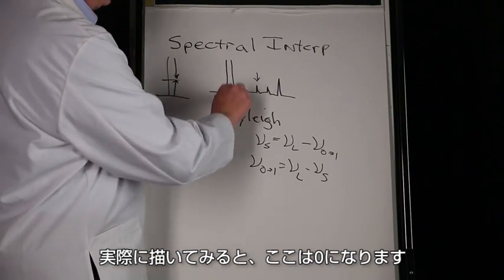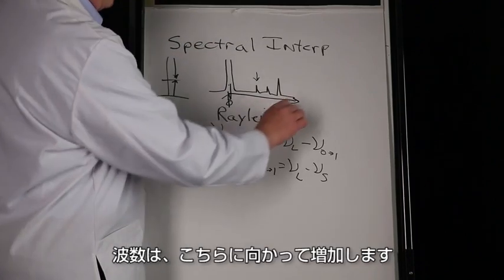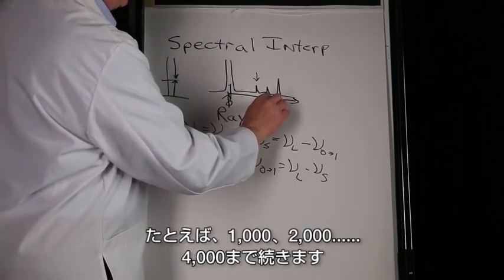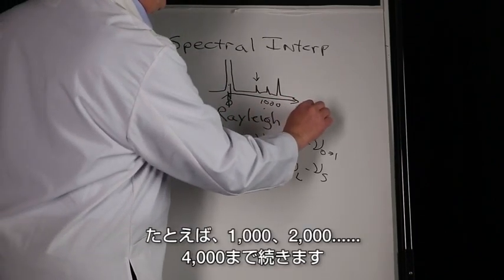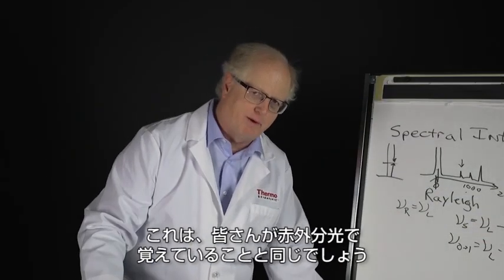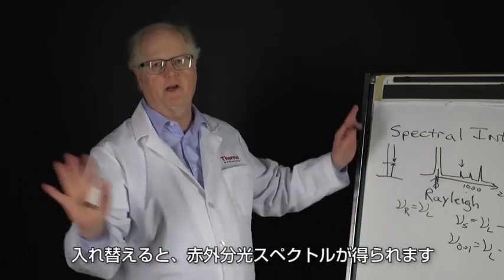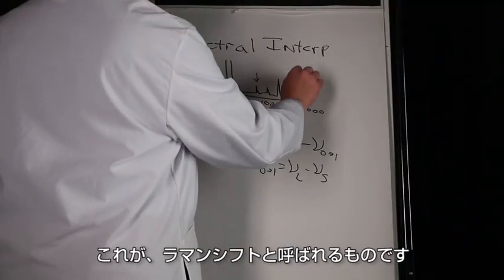We actually plot it so that now this becomes zero and your wavenumbers are going this way - say at a thousand, two thousand, etc., up to four thousand. That's exactly what you're doing. Remember from the infrared, that's how infrared spectrum plots. Flip it around, you got an infrared. This is what's called Raman shift.